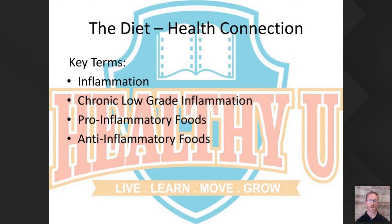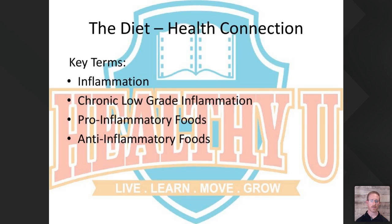Here are some key terms we're going to use: inflammation, chronic low-grade inflammation, pro-inflammatory foods, and anti-inflammatory foods. In additional sections we'll specifically lay out which foods are pro-inflammatory and which are anti-inflammatory. In this section, we want to talk about what inflammation is creating.